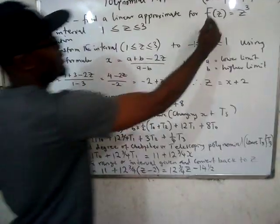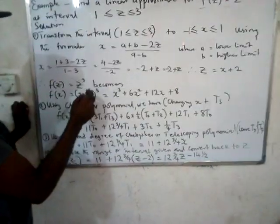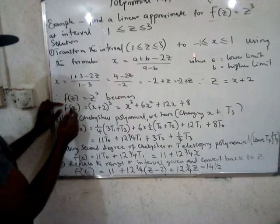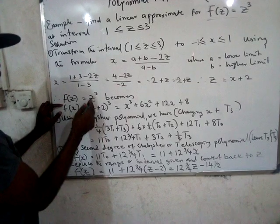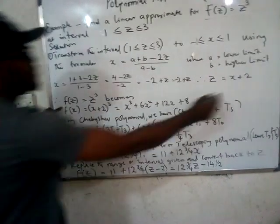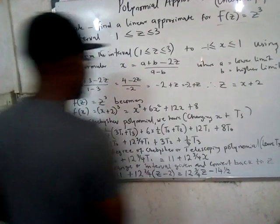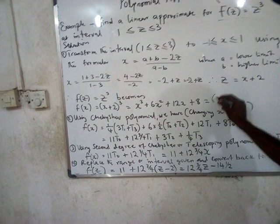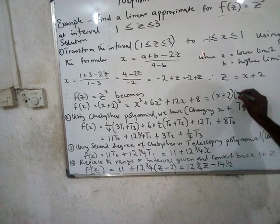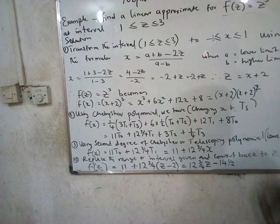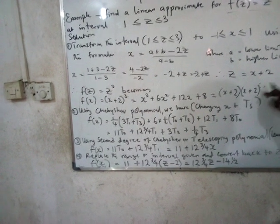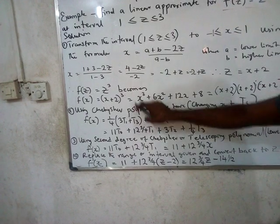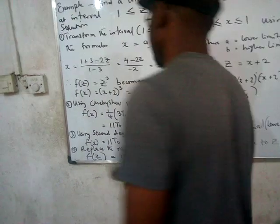Now this is the function you were given initially: f(z) = z³. Anywhere you see z, replace it with x + 2. So f(x) = (x + 2)³. Expanding this: (x + 2)(x + 2)² — we expand (x + 2)² and then multiply through. This gives us the expanded polynomial expression in x.